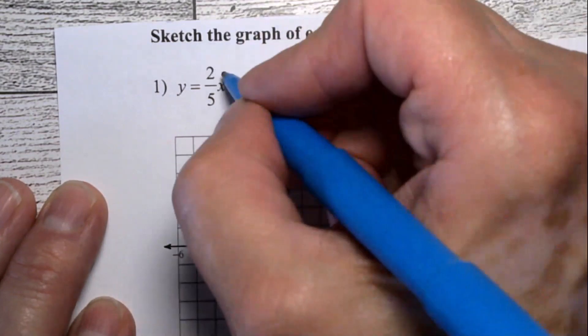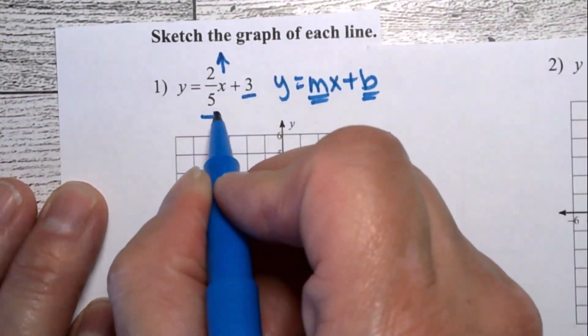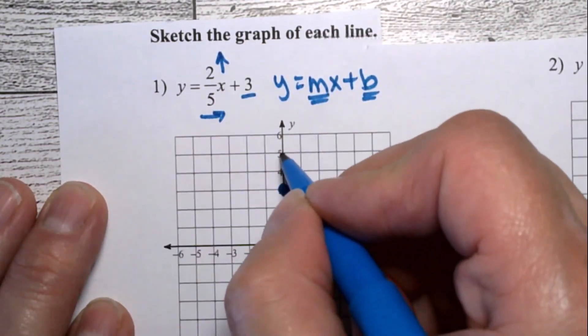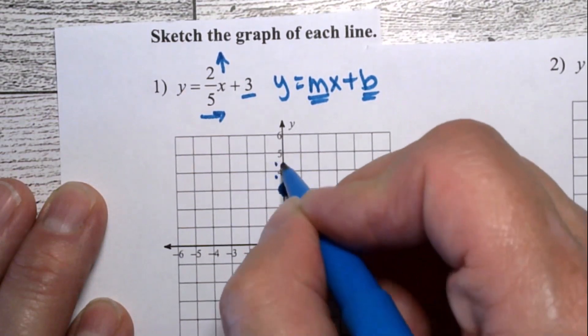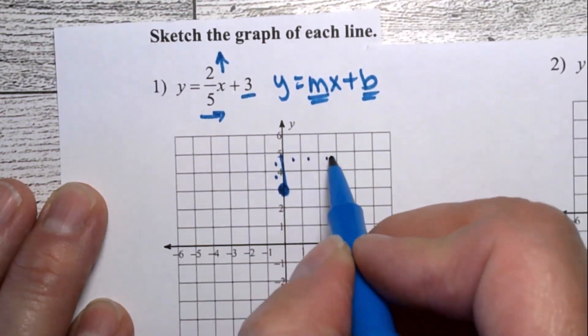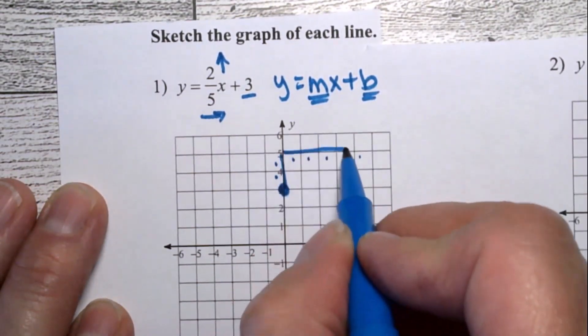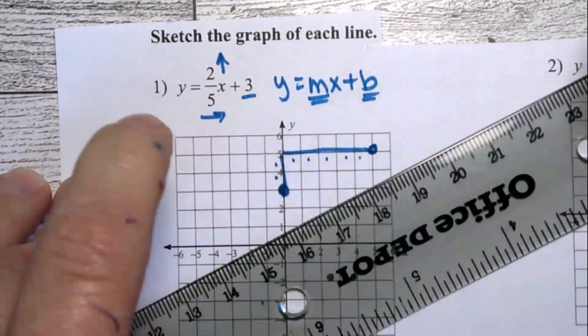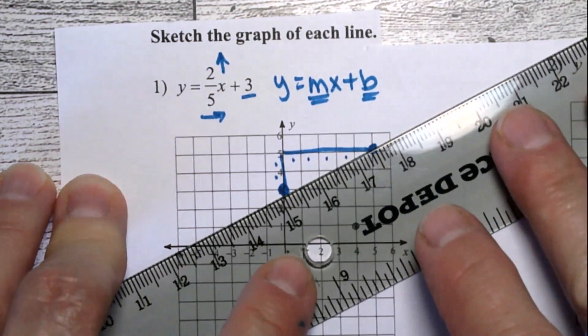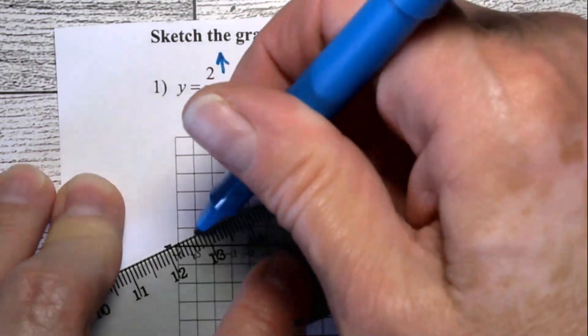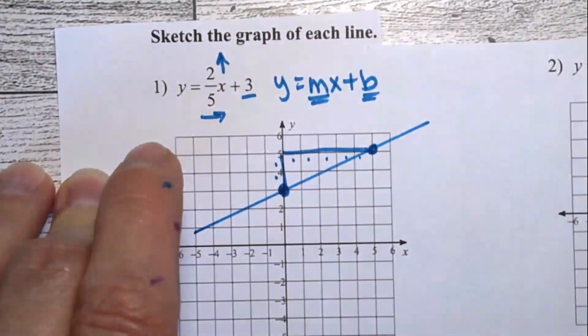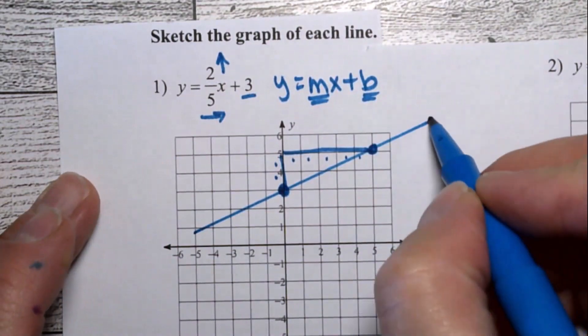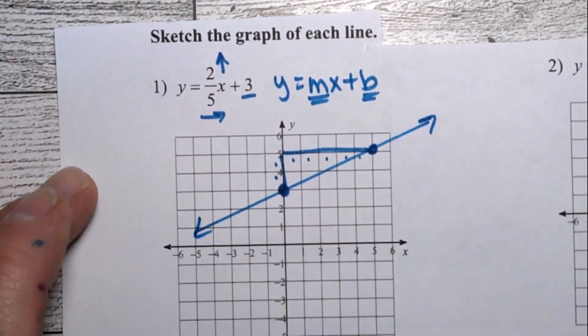That means we are going to go up two over five. Up two, one, two, over five, one, two, three, four, five, and there's another point there, and we graph the line. And we are done with problem number one.